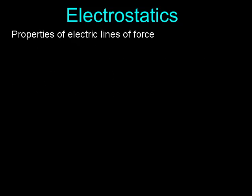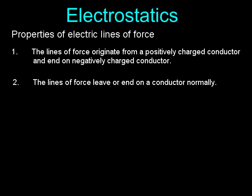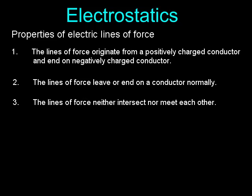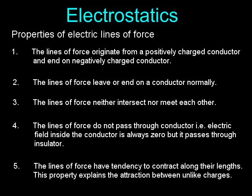Properties of Electric Lines of Force: Lines of force originate from a positively charged conductor and end on a negatively charged conductor. They leave or end on a conductor normally. They neither intersect nor meet each other. They do not pass through a conductor — the electric field inside a conductor is always zero — but they pass through an insulator. Lines of force have a tendency to contract along their lengths, which explains the attraction between unlike charges.